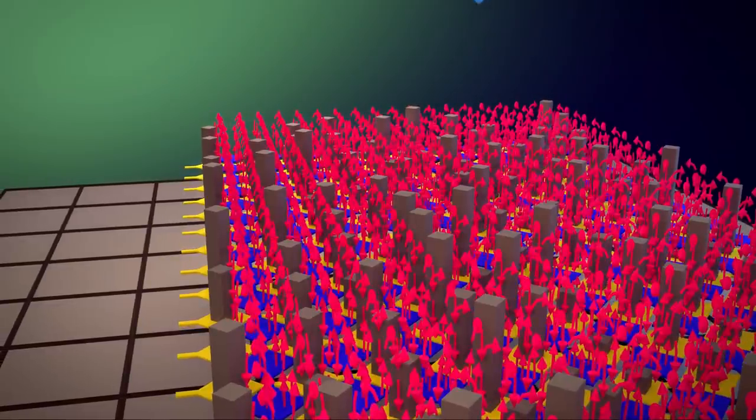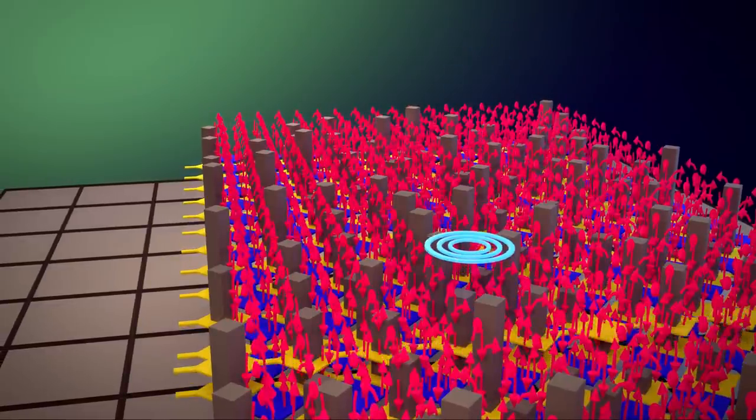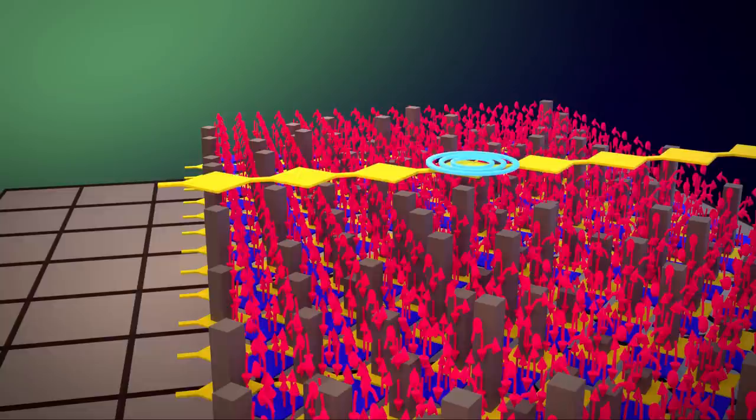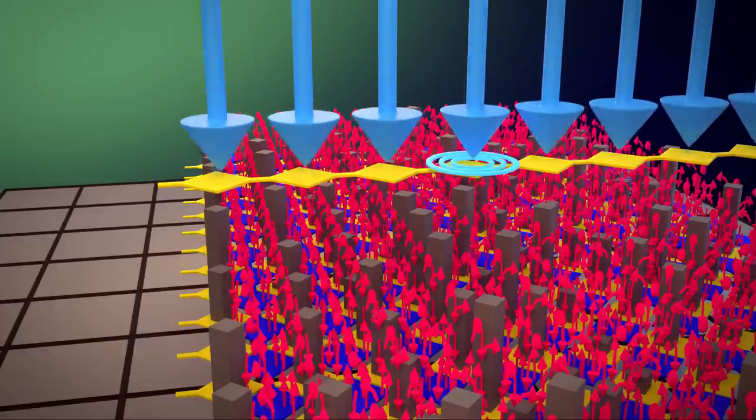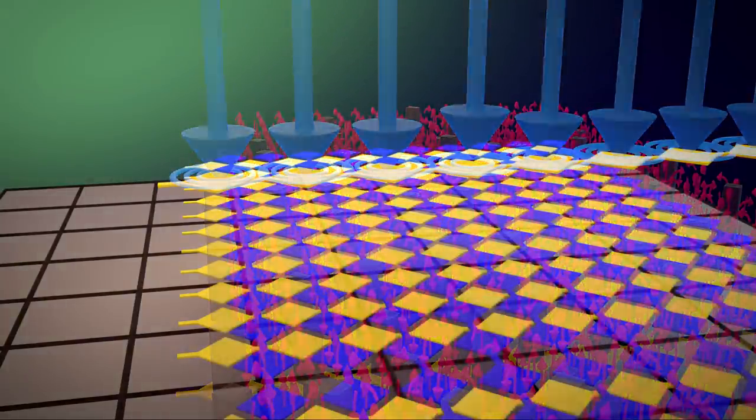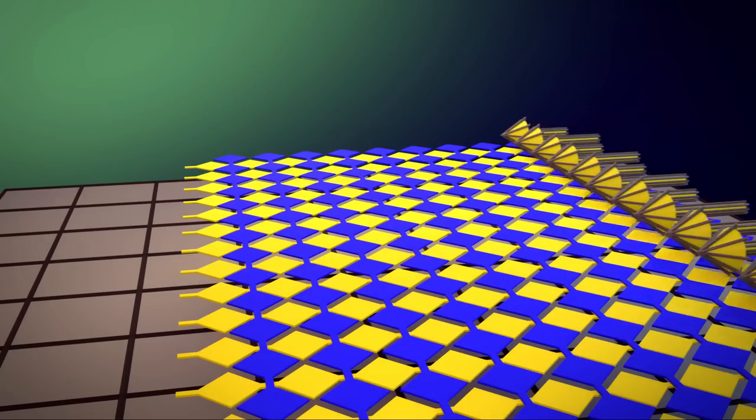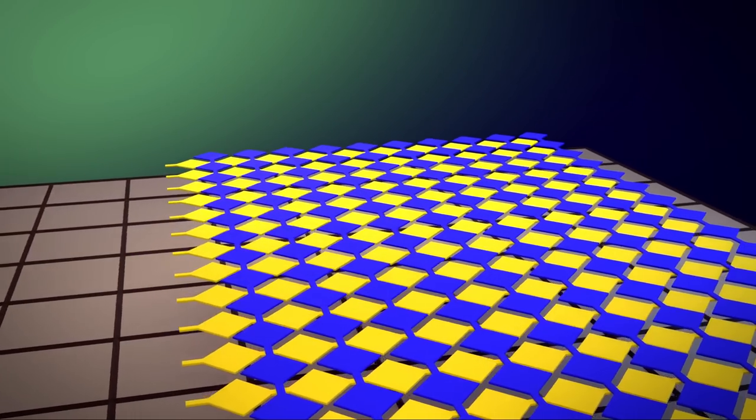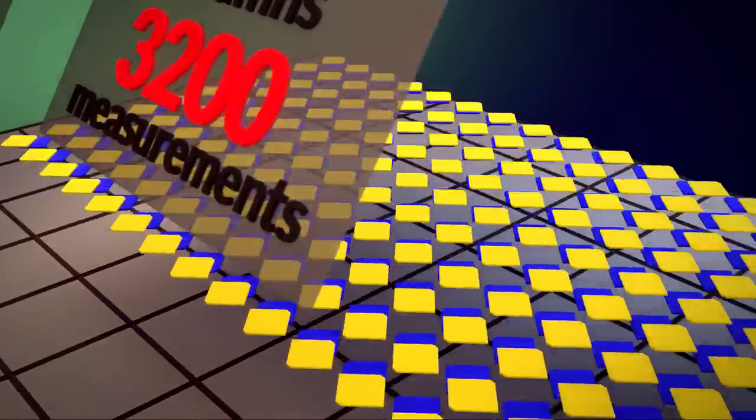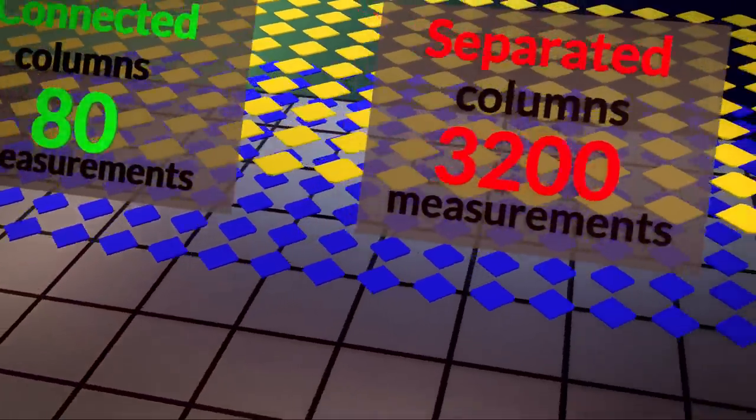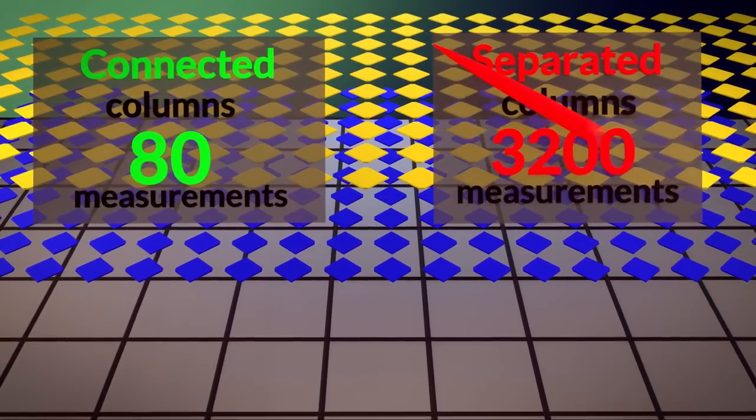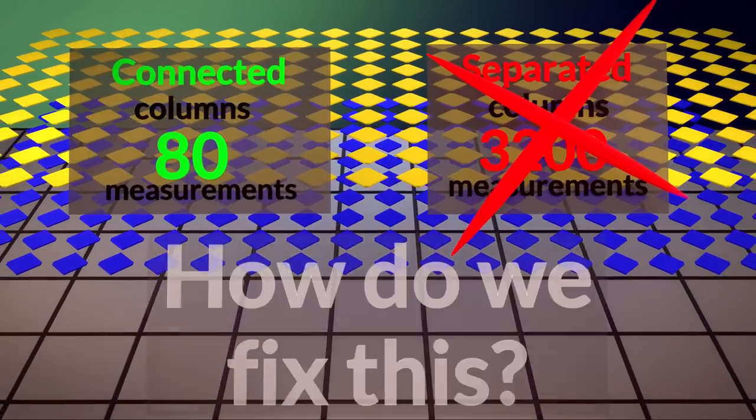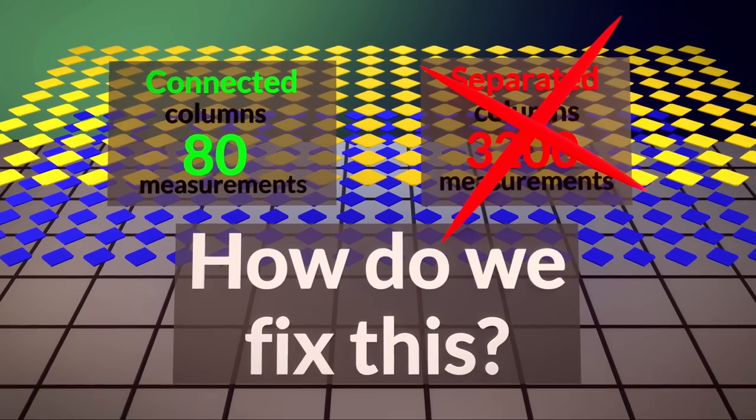Say I tap here. Well, because the entire yellow column is connected, it can't distinguish whether there was a tap here, or here. This is not a good touchscreen. We have to measure the entire column simultaneously, because if we break up the column and measure individual diamonds, we will end up measuring 3200 points, and that is too many points. So then how do we get it to work properly?